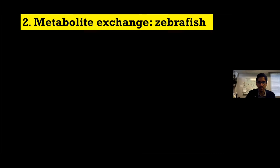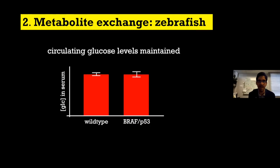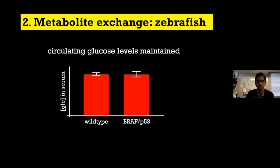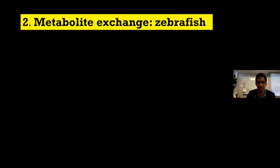One interesting question is whether taking up all of this glucose could alter the physiology of the animal. These tumors in the zebrafish get rather large, representing a relatively significant glucose sink. Everyone appreciates that glucose levels are carefully regulated in the blood — they can't be too high or too low. We were interested in whether these tumors taking up all of this glucose might actually disrupt glucose homeostasis. But when we tried to quantify glucose levels in the serum of these animals, whether the zebrafish were wild type or had large melanoma tumors, glucose levels were kept constant.